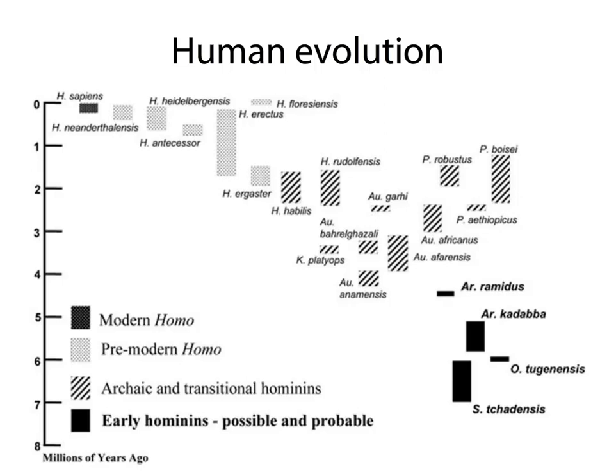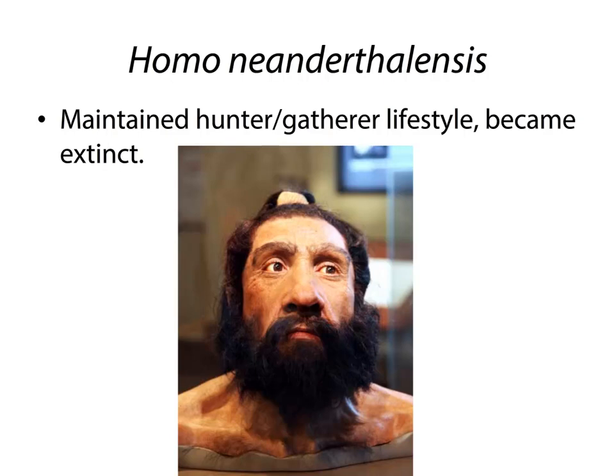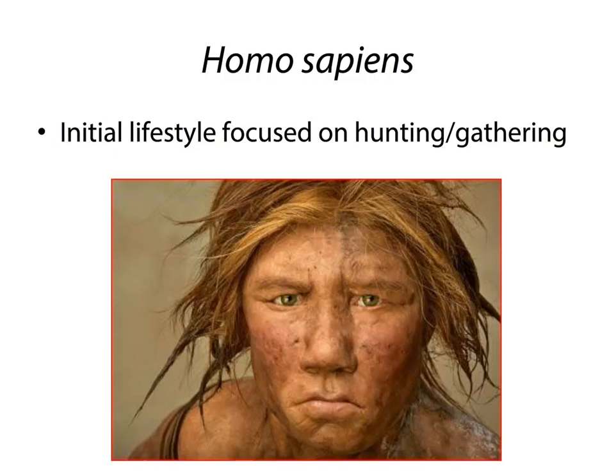At one point in time, there were multiple species of humans wandering around. The Neanderthals — we did exist at the same time as them, and we do share genes with them, which means there was some interbreeding. Interestingly, they always maintained the hunting and gathering lifestyle, but that might have actually led to them becoming extinct, whereas we shifted to agriculture and were able to do much better because we could have a surplus of food. Homo sapiens' initial lifestyle focused on hunting, gathering, and likely scavenging as well.